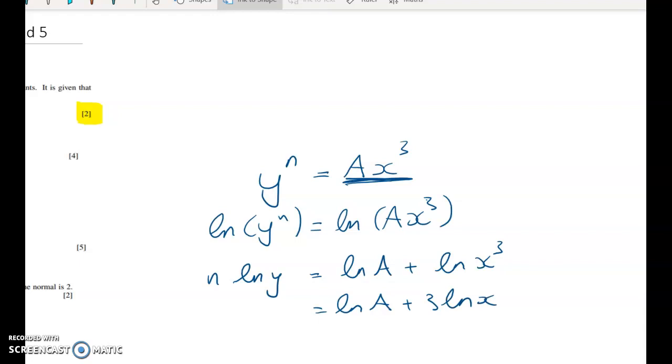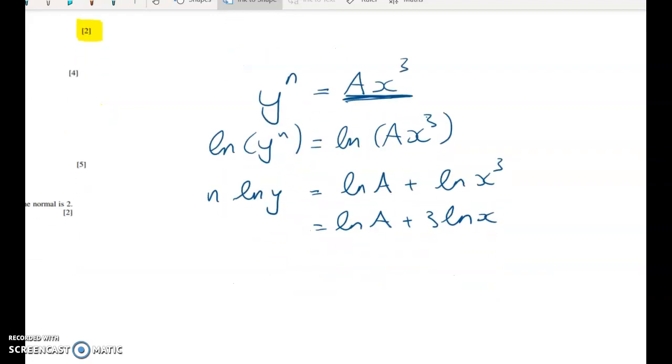Now what we're trying to get to here is an equation that is roughly in the form y equals mx plus c. But instead of y and x, we're going to have log y and log of x. So we're not quite there yet. I'm going to divide both sides through by n. And that will give me log of y is equal to, so reordering, I get 3 over n log x plus 1 over n log a.